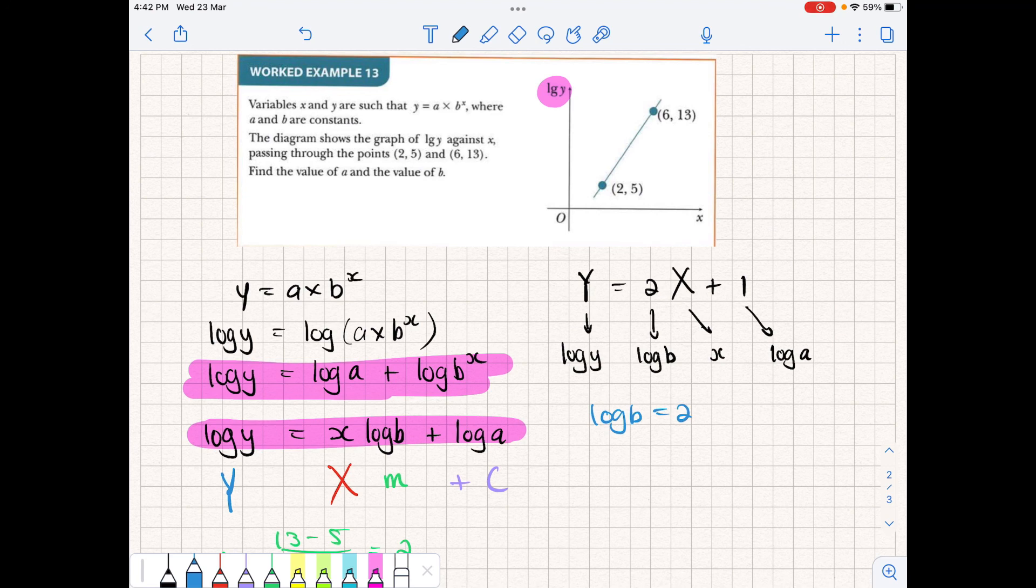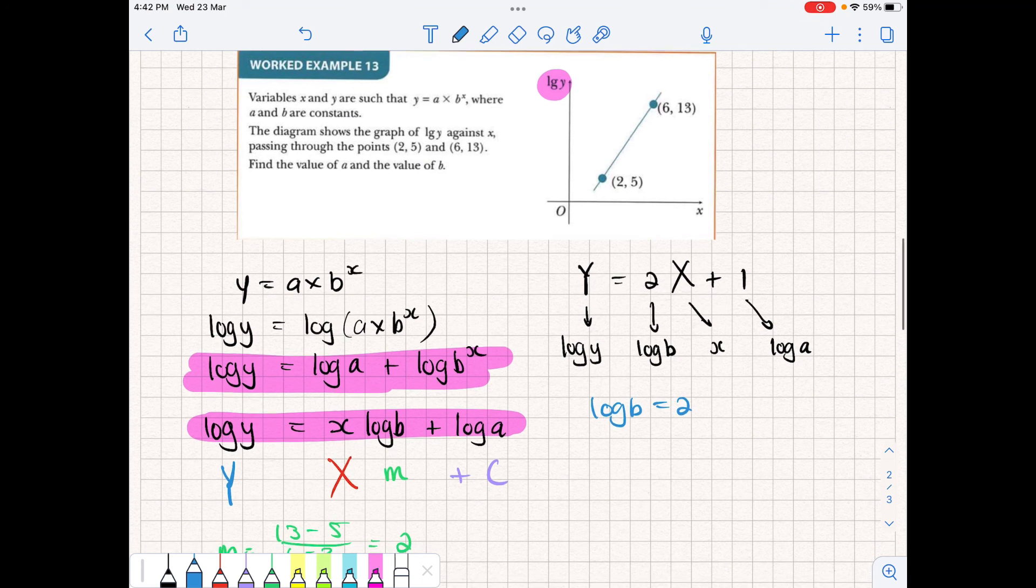So log of b must be equal to 2, because that is representing the gradient. We worked out the gradient as 2. This is to base 10. So solving for this, we can say that b is just equal to the base is 10. So 10 to the power of 2, and that gives us b = 100. And the same thing here, log of a must be equal to 1, and so a must be equal to 10.